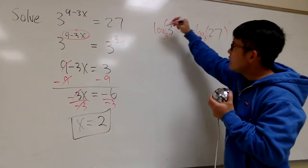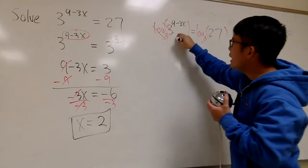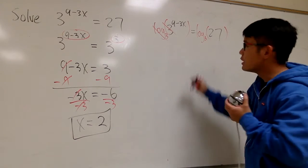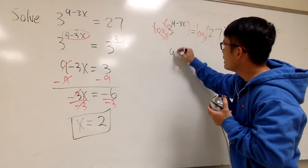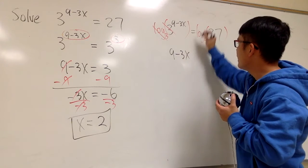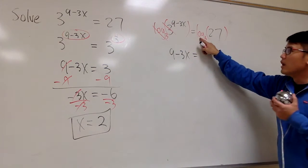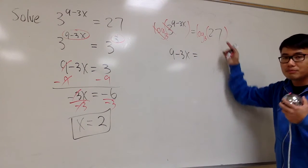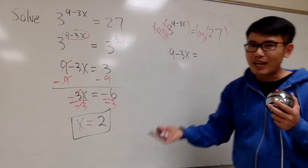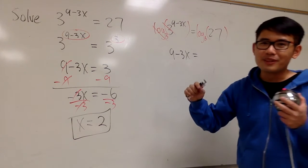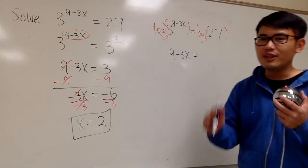On the left side, log base 3 and the 3 base right here, they will cancel each other out, and we get 9 minus 3x, and this is equal to log base 3 of 27. How do we do that? You can use a calculator, or you can check out the video in the description. I'll show you a detailed way for that.